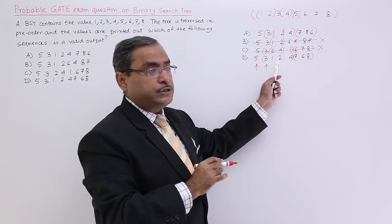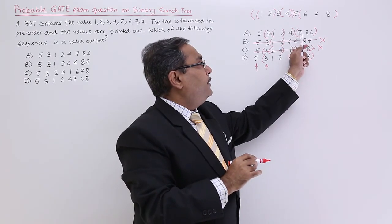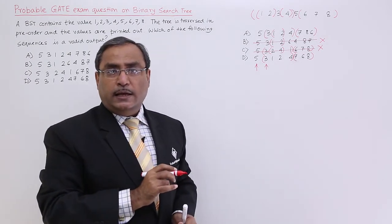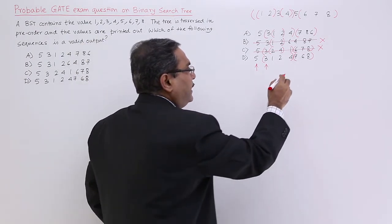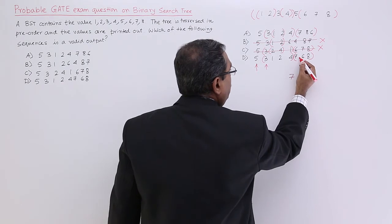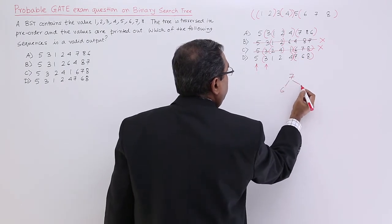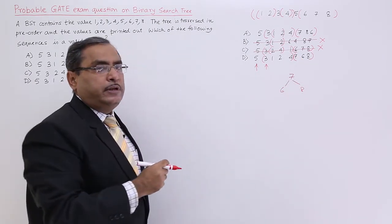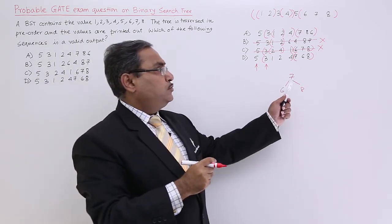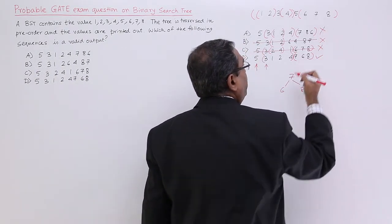Now come to this 7, 8, 6 and 7, 6, 8. So I think in case of 7, if 7 is the root node, then 6 can be the left child and 8 can be the right child. So that is why this is the correct one and it cannot happen.